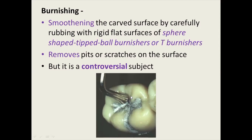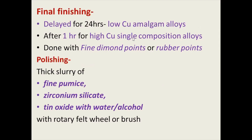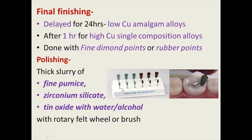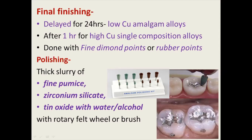The final finishing is delayed 24 hours for low copper amalgam. For high copper single composition, it can be done after one hour and is done with fine diamond points or rubber points. Polishing is done with a thick slurry of fine pumice powder, or zirconium silicate powder, or tin oxide with water or alcohol, using a rotary felt wheel or brushes. This gives a well finished and polished final restoration.